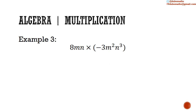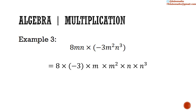Example 3: 8mn multiplied by negative 3m squared n cubed. That equals 8 multiplied by negative 3 multiplied by m multiplied by m squared multiplied by n multiplied by n cubed. 8 multiplied by 3 is 24, and a positive times a negative is negative, so negative 24. m to the first power multiplied by m squared equals m to the third power. n multiplied by n cubed equals n to the fourth power. The answer is negative 24m cubed n to the fourth power.